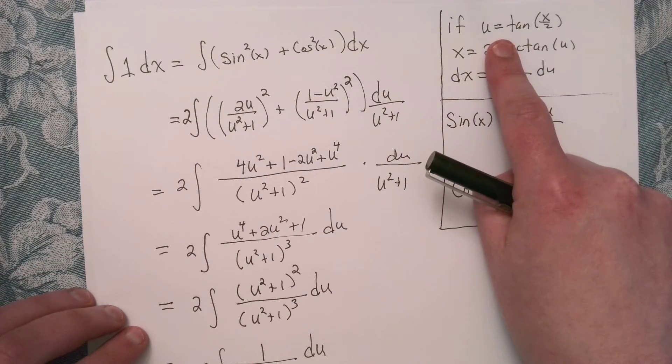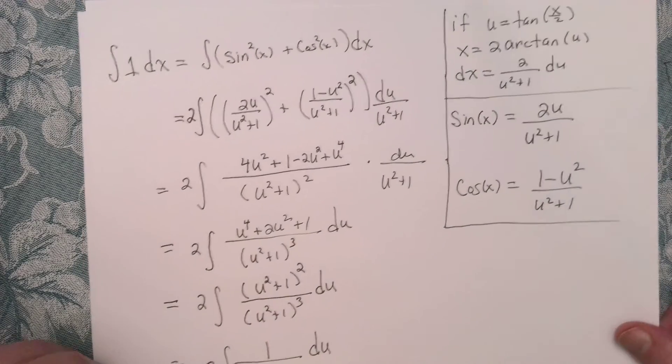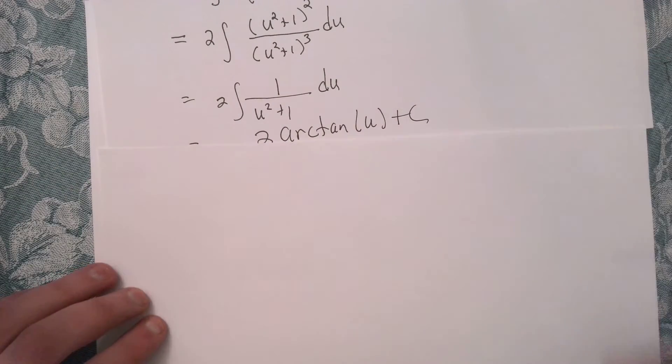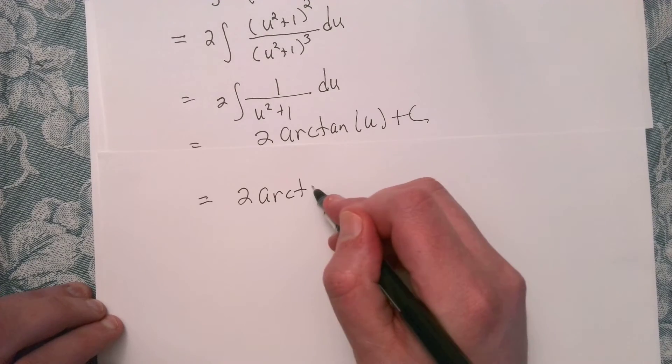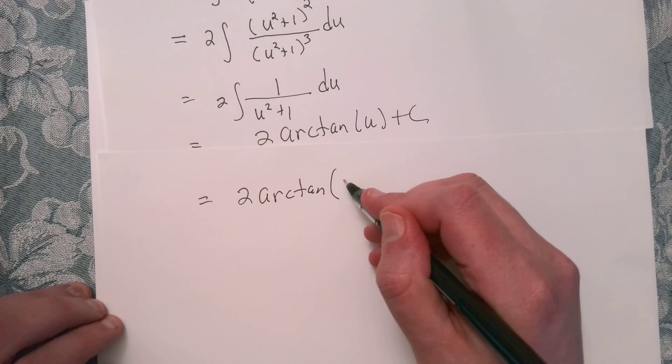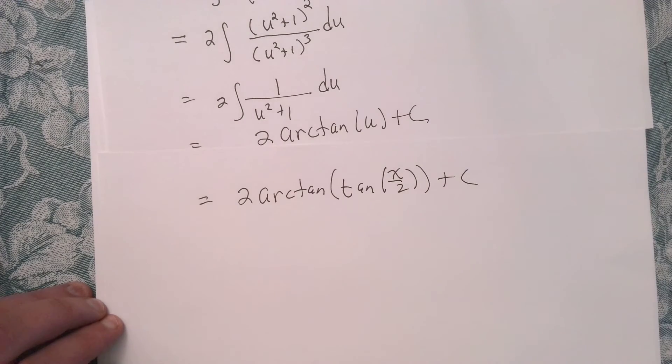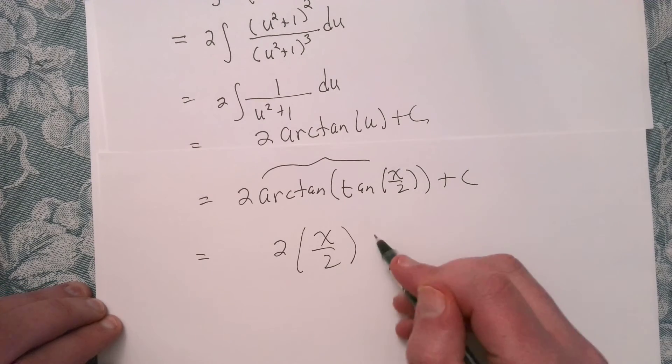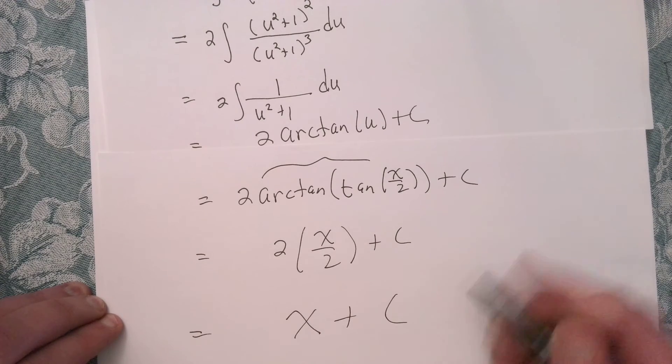So we're going way back here. By our Weierstrass substitution, we said that u is equal to the tangent of x over 2. So now we're going to plug that back in and use sort of our rules of inverse functions, our composing inverses. So we've got 2 times the arctangent of the tangent of x over 2. And so these are inverses. So that gives me 2 times x over 2 plus c, which gives me x plus c.